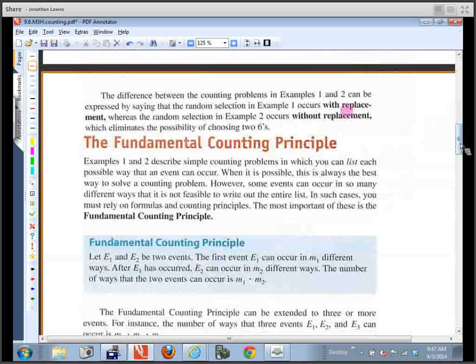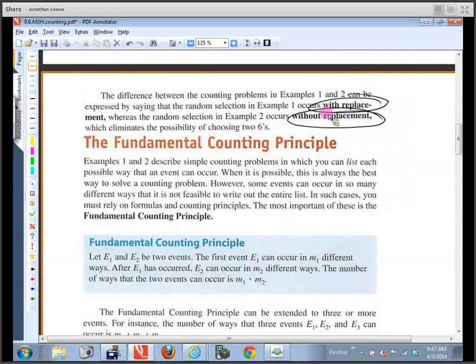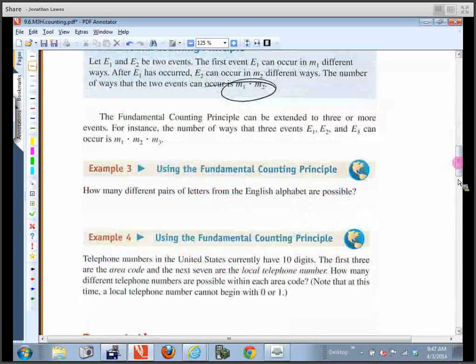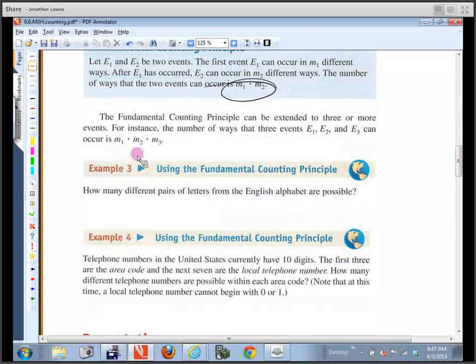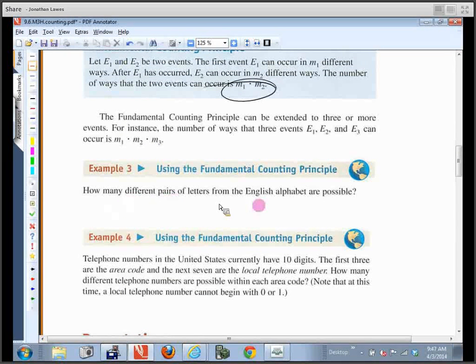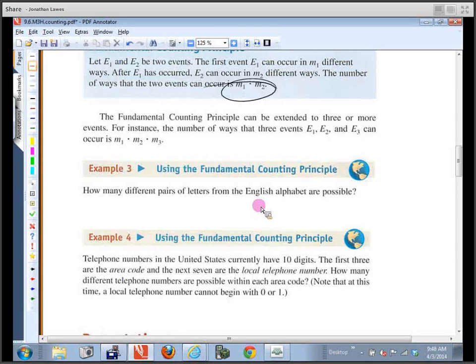So if you look at these other problems right here, this is where it talks about with replacement and without replacement. It talks about a fundamental counting principle where we multiply these together, and it runs through a bunch of examples. Notice how they've got m1, m2, m3 where they're multiplying them together—that's kind of like the license plate one. And it says things like, how many different pairs of letters from the English alphabet are possible? Well, how many choices for the first letter? 26. How many choices from the second letter? 26. So we'd multiply those together.